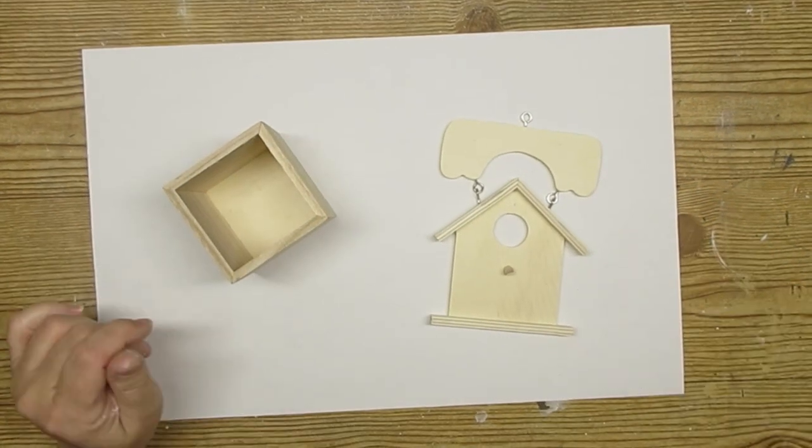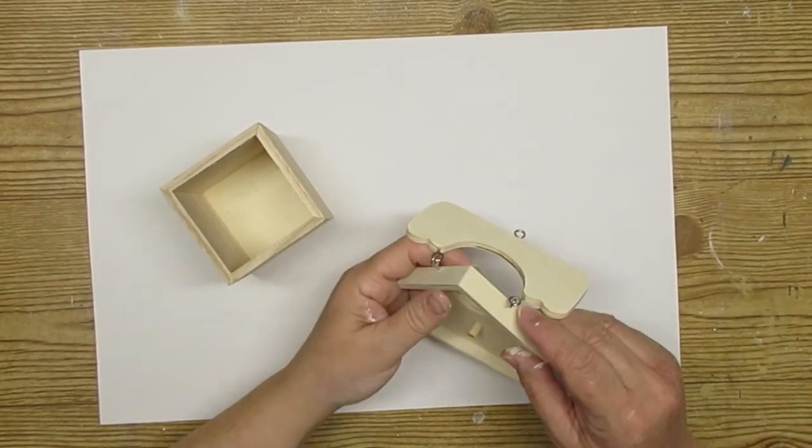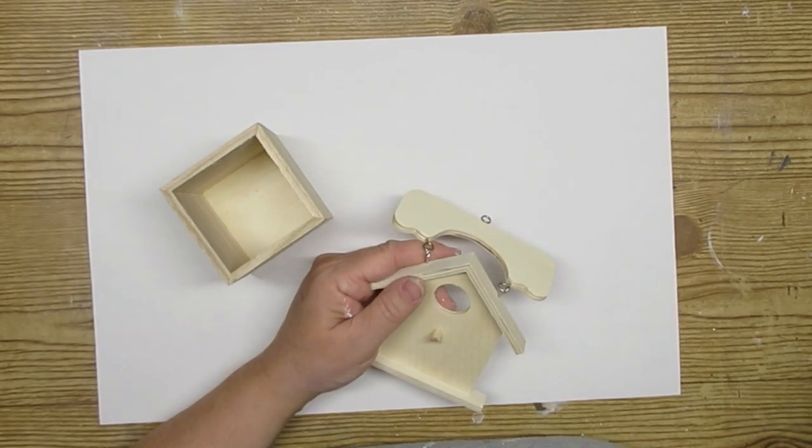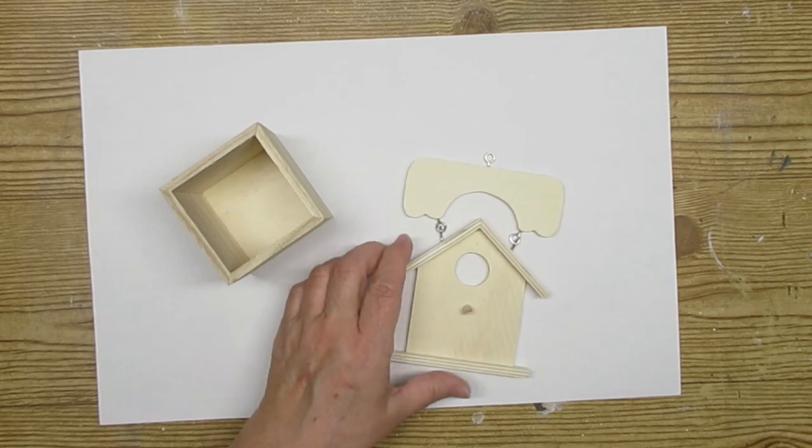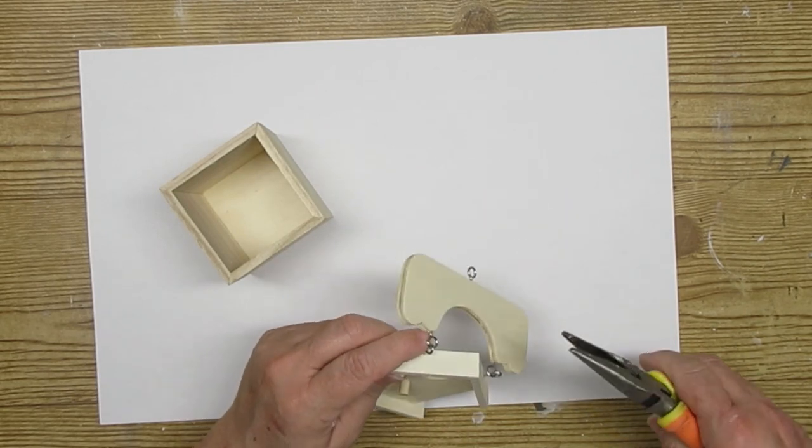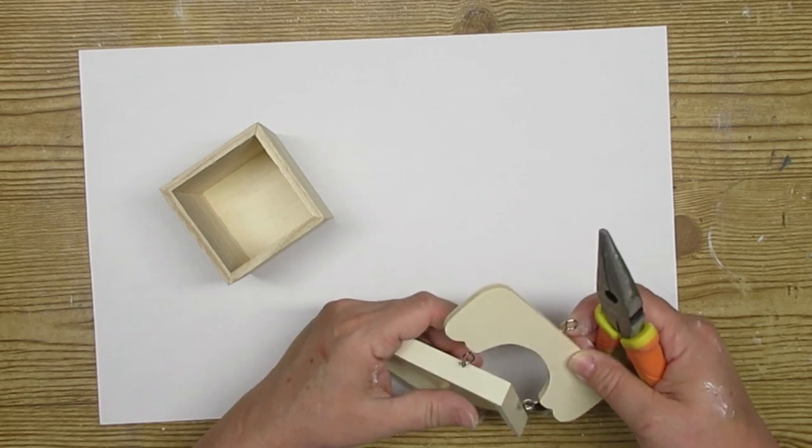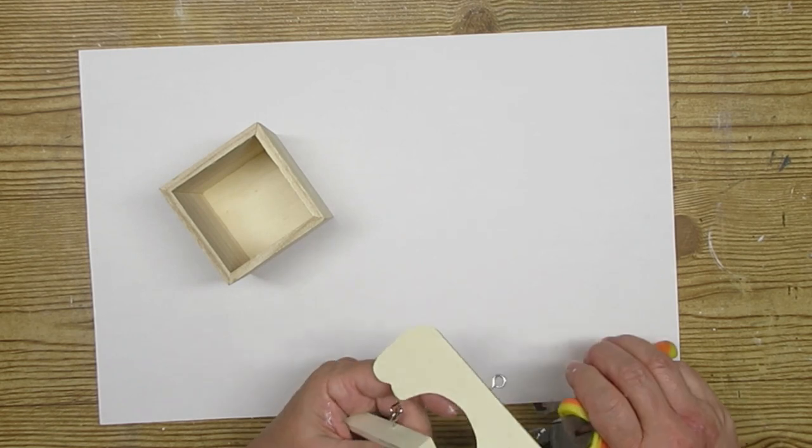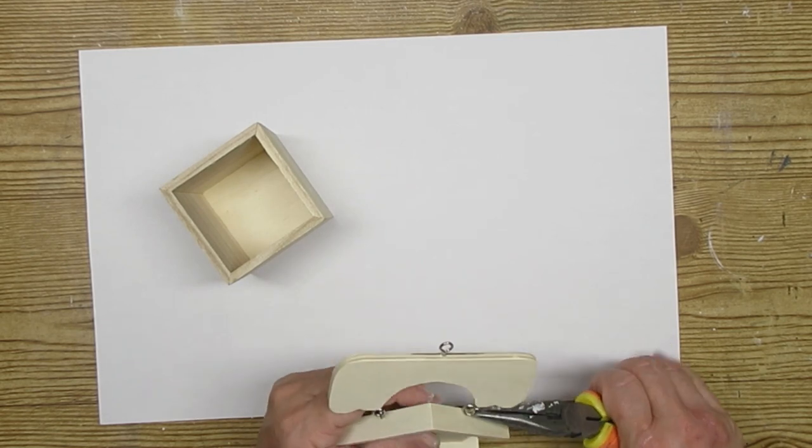For this last project, I'm using this square wooden box that came from the Dollar Tree and this little hanging birdhouse that came from Dollarama. So all together, this cost me $2.50. I think this is a pretty good steal for this little project. I'm just going to go ahead and take my needle-nose pliers and then just take off that top part because I'm not going to need it.